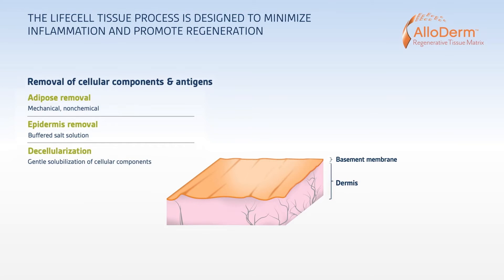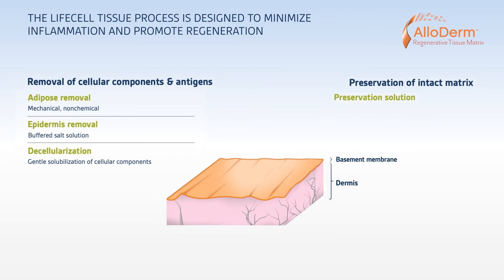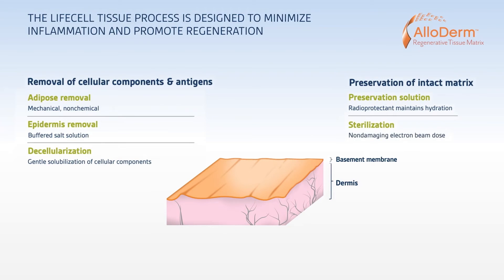The remaining undamaged tissue is preserved for packaging, sterilization, and storage. We place the tissue into a radioprotectant preservation solution to maintain hydration and protect the tissue during the final step, sterilization. Our low-dose electron beam sterilization process was extensively tested to optimize both the method and dose in order to maintain tissue integrity.